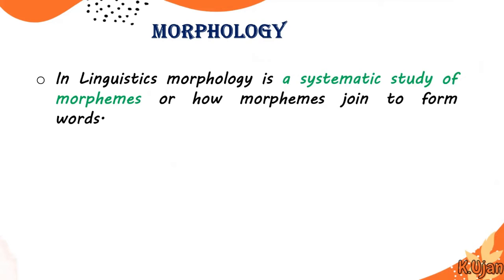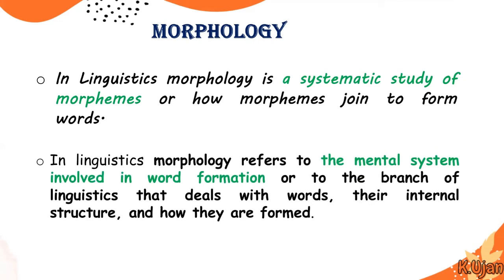Here our concern in linguistics is very different. In linguistics, morphology is a systematic study of morphemes, or how morphemes join to form words. Morphology in linguistics refers to the mental system involved in word formation, or to the branch of linguistics that deals with words, their internal structure, and how they are formed — basically how a speaker uses language to form words in the mind.